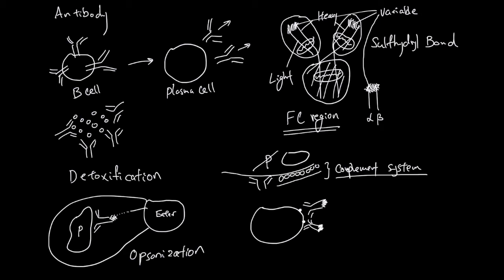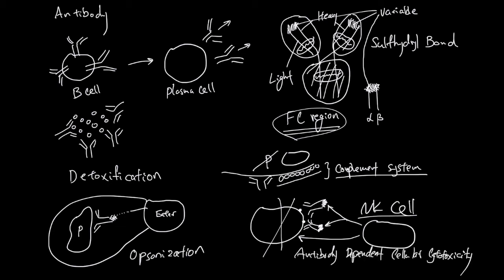NK cells can bind to these special FC regions and this binding activates the NK cell. The NK cell is going to kill this self-cell via apoptosis. This process is called antibody dependent cellular cytotoxicity. NK cells kill the problematic self-cell with similar mechanisms used by the cytotoxic T cell.